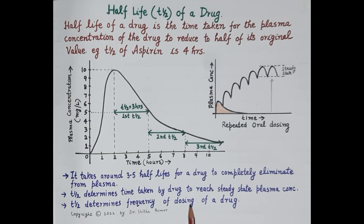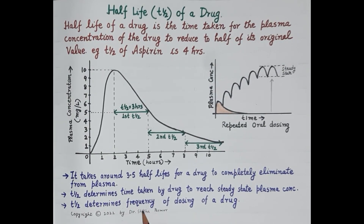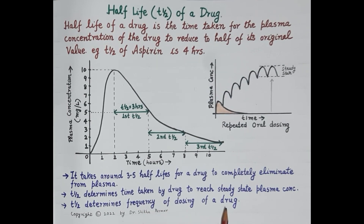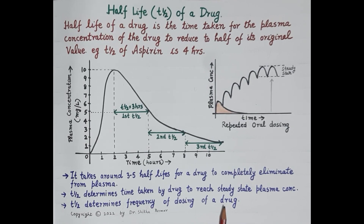Apart from this, knowledge of half-life is essential to determine the frequency of dosing of a drug — that means at what interval the drug is to be administered, whether once daily, twice daily, every eight hours, every six hours, etc. The longer the half-life of a drug, the less frequently the drug needs to be administered.